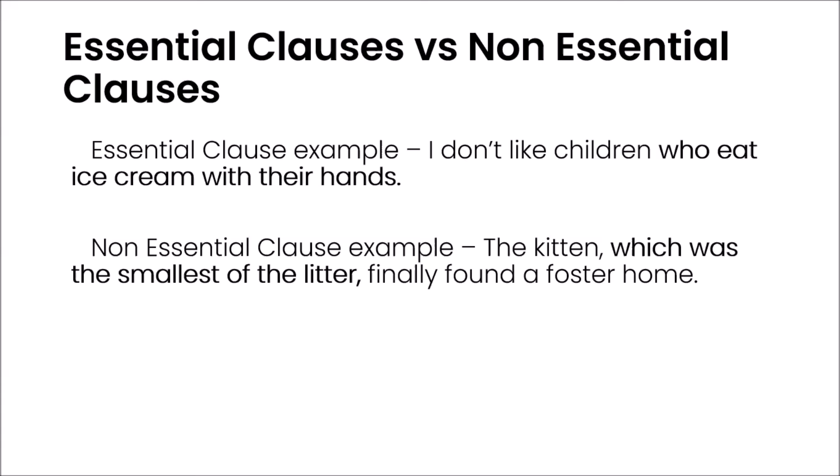A non-essential adjective clause, on the other hand, gives an extra description that is not strictly required to understand the writer or speaker's intent. For example, 'the kitten, which was the smallest of the litter, finally found a foster home.' The adjective clause gives extra information, but it isn't necessary to get the gist of the sentence about the cat finding a home. Non-essential adjective clauses are set off with commas to show that they aren't as strongly connected to the rest of the sentence.